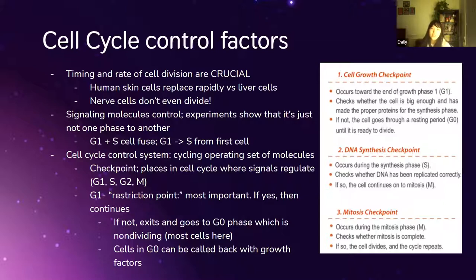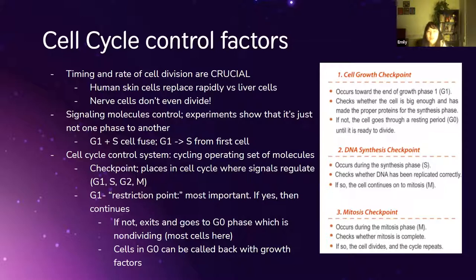These signals help the cell move past what we call checkpoints, where cells check for cancer and other abnormalities. The most important checkpoint is the G1 point, also called the restriction point. Most cells that are bad for the body die at this point, but once you pass it, you're pretty much set to become a dividing cell. If a cell doesn't pass — for example if it's too big or has too few chromosomes — it goes into G0 phase, a stage where cells do not divide. Most cells are in G0.